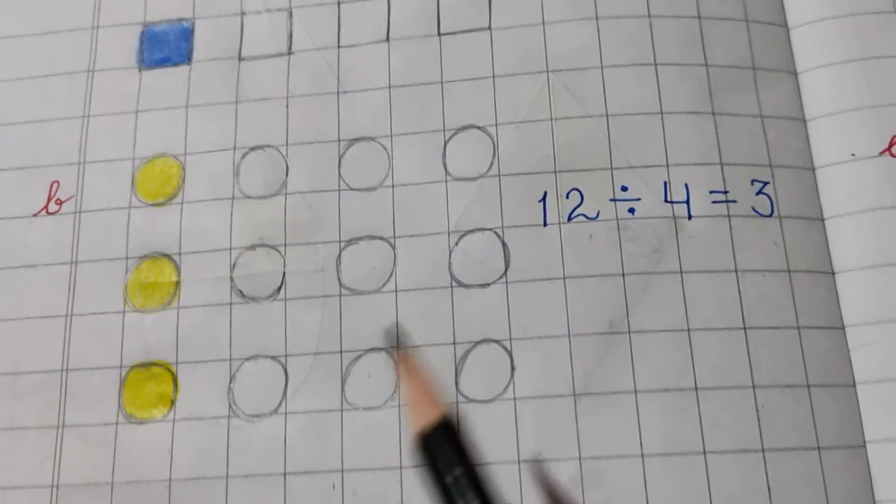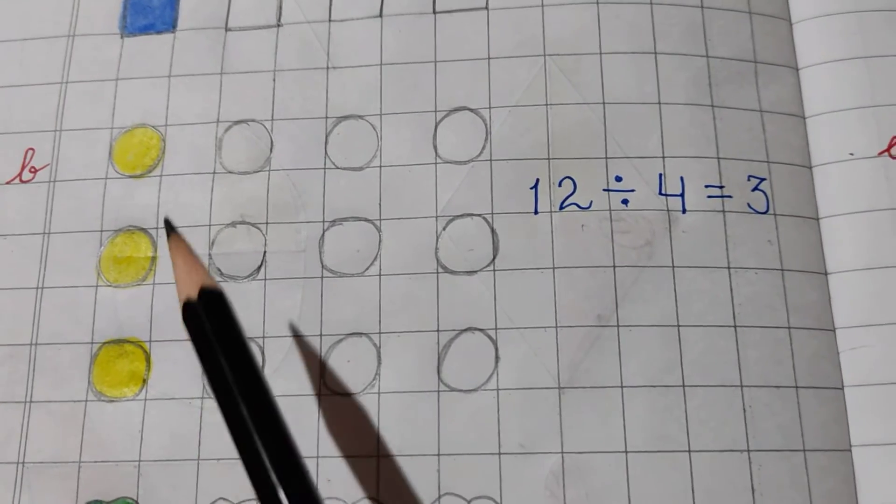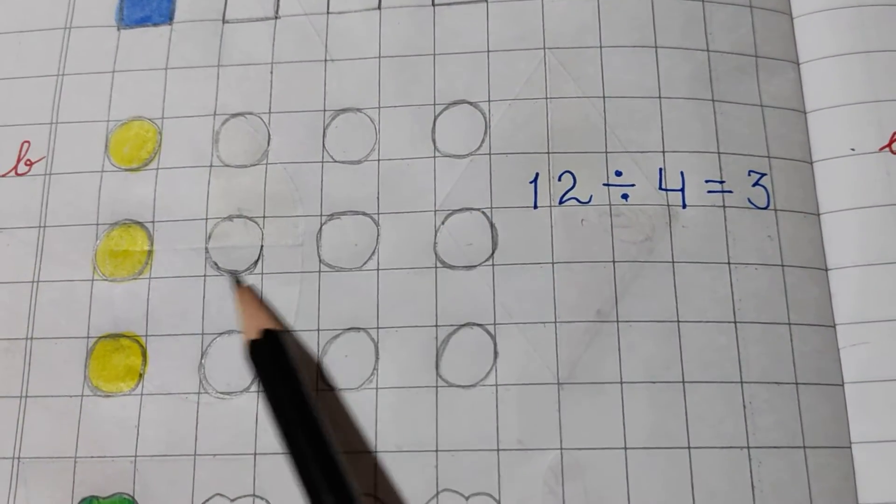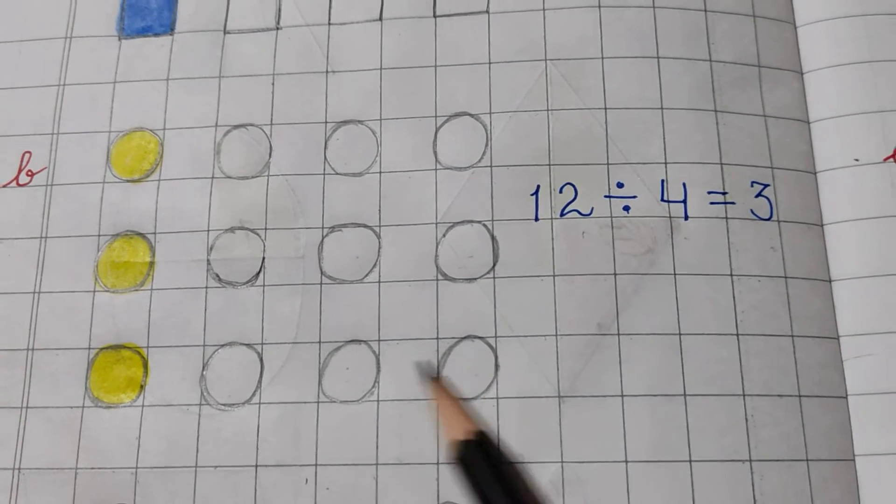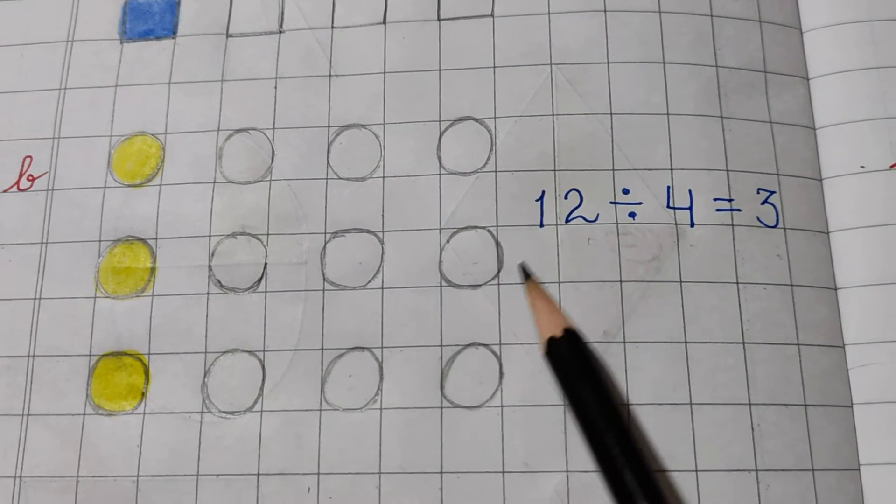In B part, I have drawn some circles. Let's count 1, 2, 3, 4, 5, 6, 7, 8, 9, 10, 11, 12. These are 12 circles.